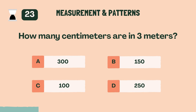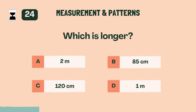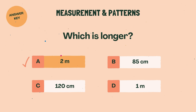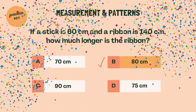How many centimeters are in 3 meters? A, 300. Which is longer? A, 2 meters. If a stick is 60 centimeters and a ribbon is 140 centimeters, how much longer is the ribbon? B, 80 centimeters.